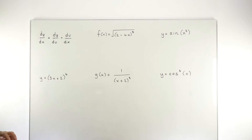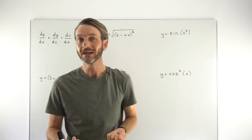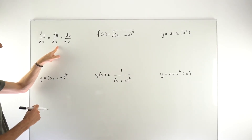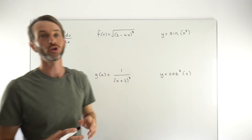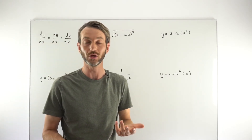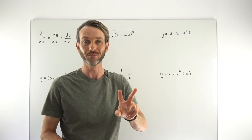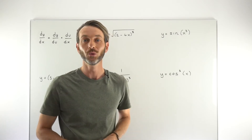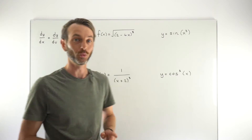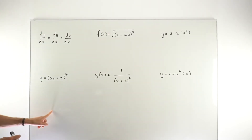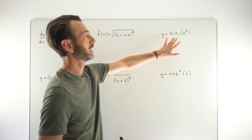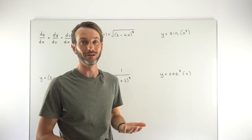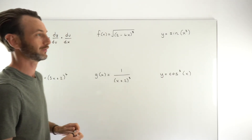There are two ways to approach a chain rule problem. You can either approach it formulaically using all the letters, which can get a little cumbersome, or you can approach it more intuitively. It could be that your teacher will mandate that you use the formal method, so I'm going to work this first example using the formal method, and then the others using a more intuitive method. You get the same answer both ways — one is the longhand version and one is the shorthand version.